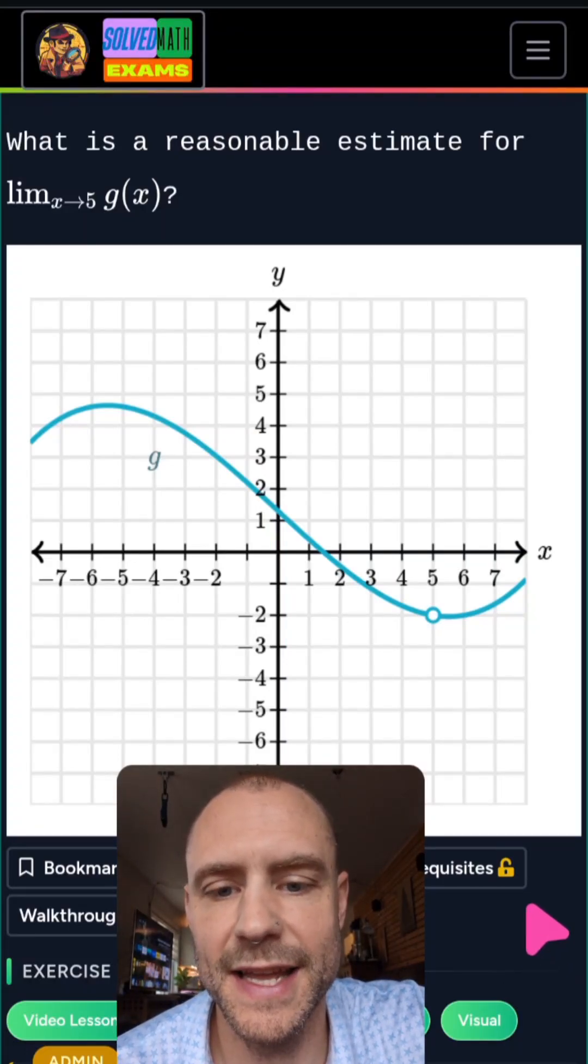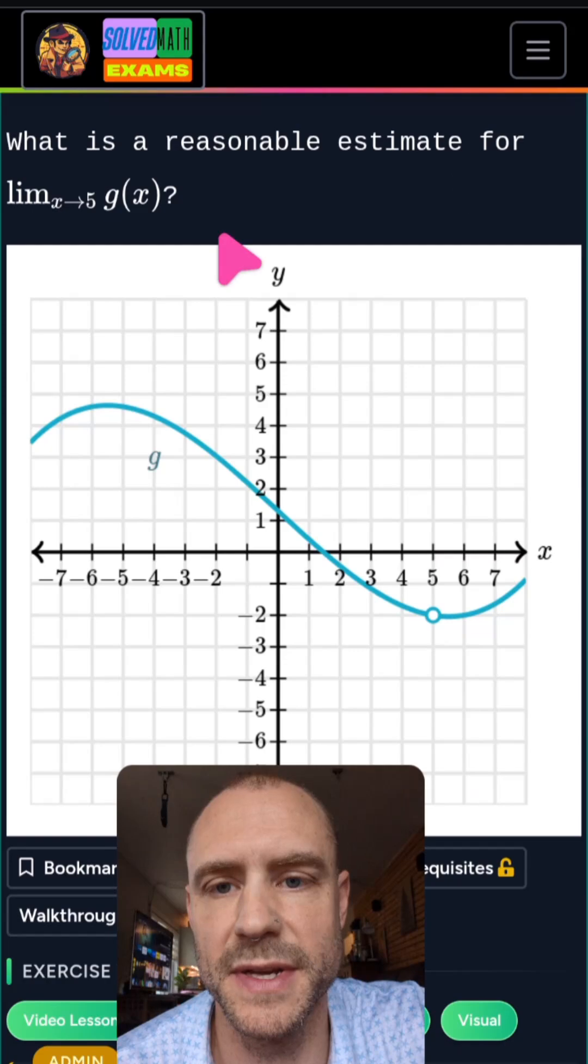Let's test your knowledge of limits. Can you answer this question using this graph? What is a reasonable estimate for the limit of g of x as x approaches 5?